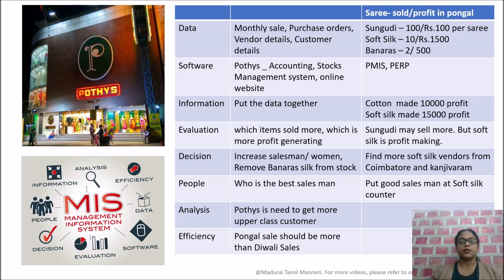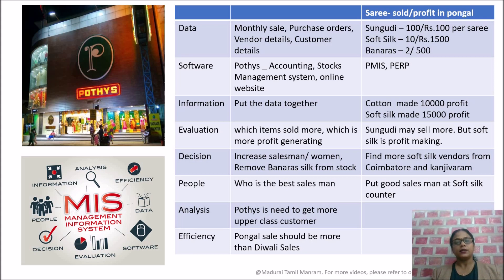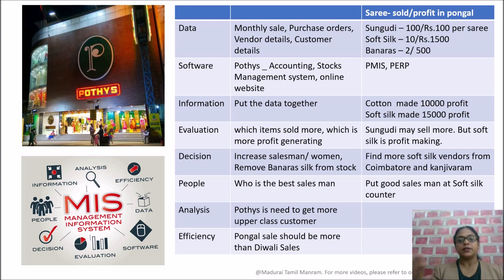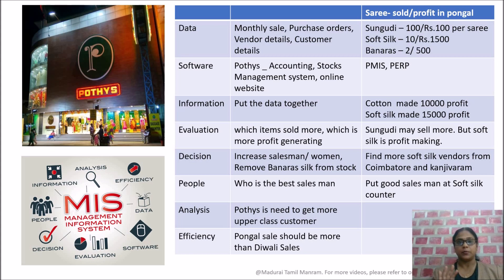You can store data using accounting software, billing software, stock management software — both apps and websites are available. These softwares are involved in storing data. That is information — information is putting data together, analyzing and processing it to get some message out of it. For example, cotton saris gave a profit of $10,000, and soft silk also gave $10,000 profit. That is a message.